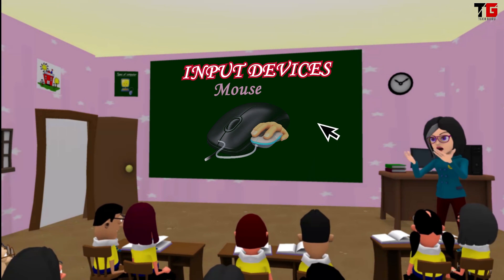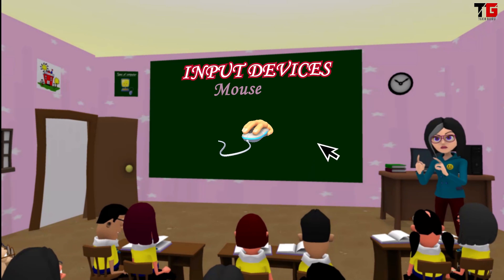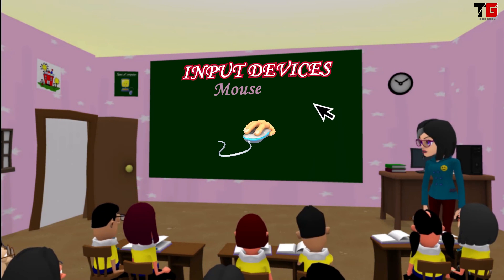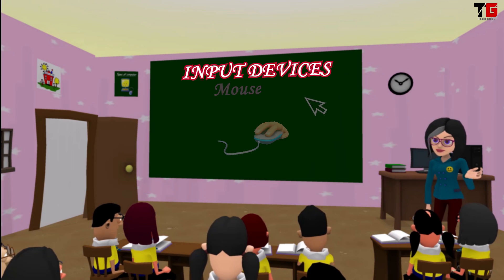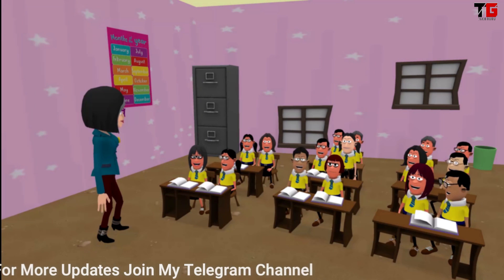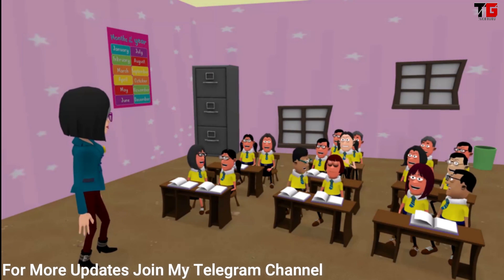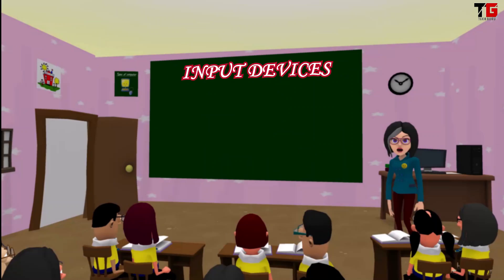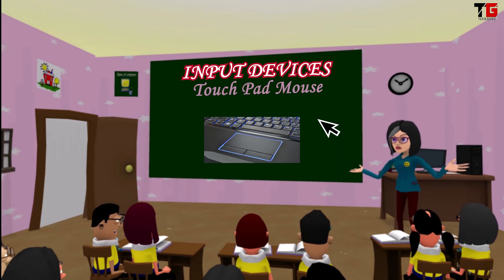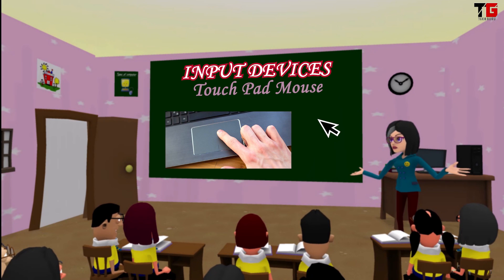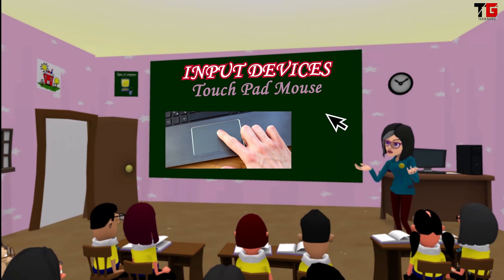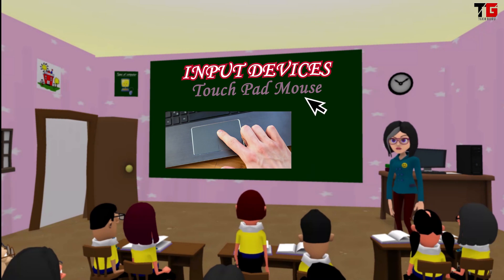Every mouse has two buttons and one scroll wheel. When we move the mouse on a flat surface, the mouse pointer moves with it. Ma'am, my father has a laptop but it doesn't have a mouse — I don't know how to work on it. Laptop has a touchpad mouse. When we move a finger on it, then it works. It also has left and right buttons. If we want, we can also plug a simple mouse with the laptop.